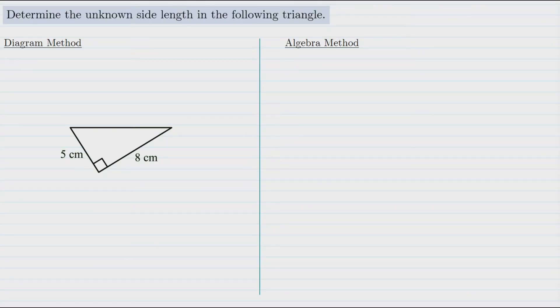In this video we'll work through a few examples to show how the Pythagorean theorem is used. Two of those examples will involve finding an unknown side length in a right triangle, and the third will involve using the Pythagorean theorem to determine whether or not a triangle is indeed a right triangle.